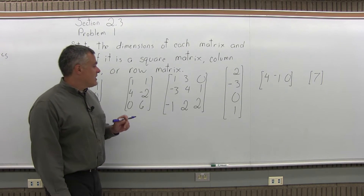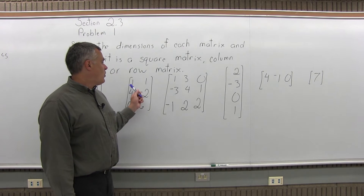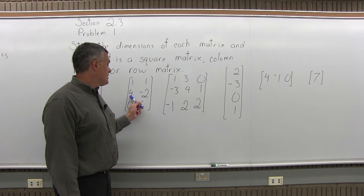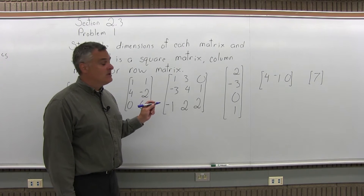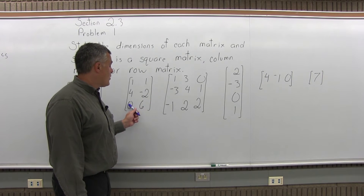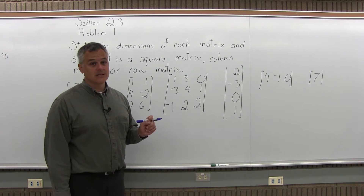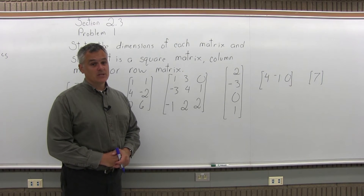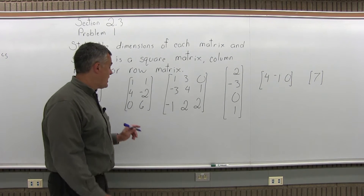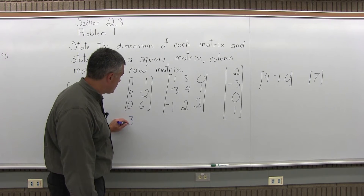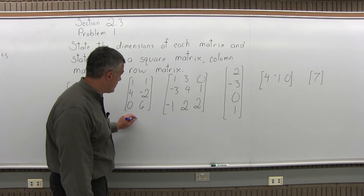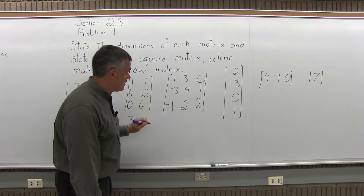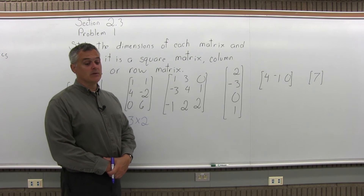The second matrix has 1, 1 on top; then a row with 4, negative 2; and underneath that a row with 0, 6. The dimensions of this matrix are 3 by 2 — state the number of rows first, which is 3, then the number of columns, giving us a 3 by 2.